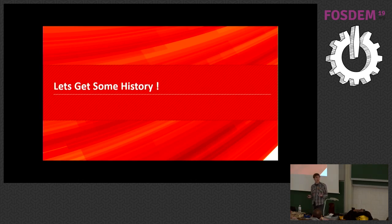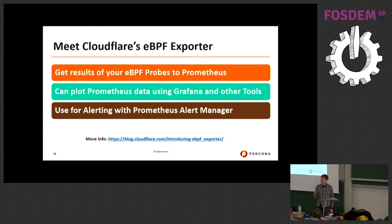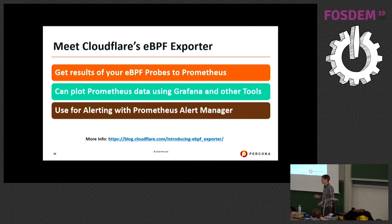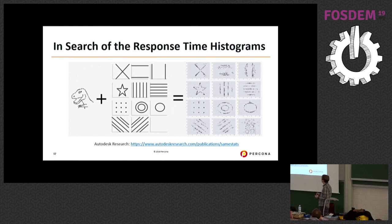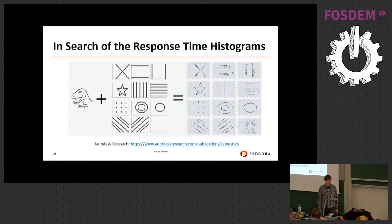All the tools I've shown are great for real-time troubleshooting analysis, but what if you want to analyze stats from the past? The state of the art here is Cloudflare's eBPF exporter, which — as the name says — is an exporter for Prometheus. You can get pretty much any data from eBPF into Prometheus, where you can plot it, use alertmanager, and do all the other good stuff.